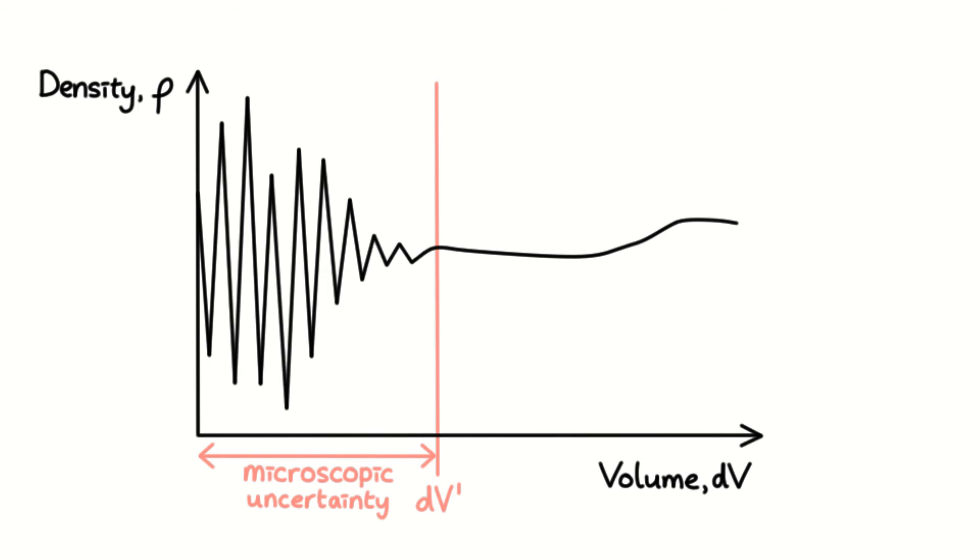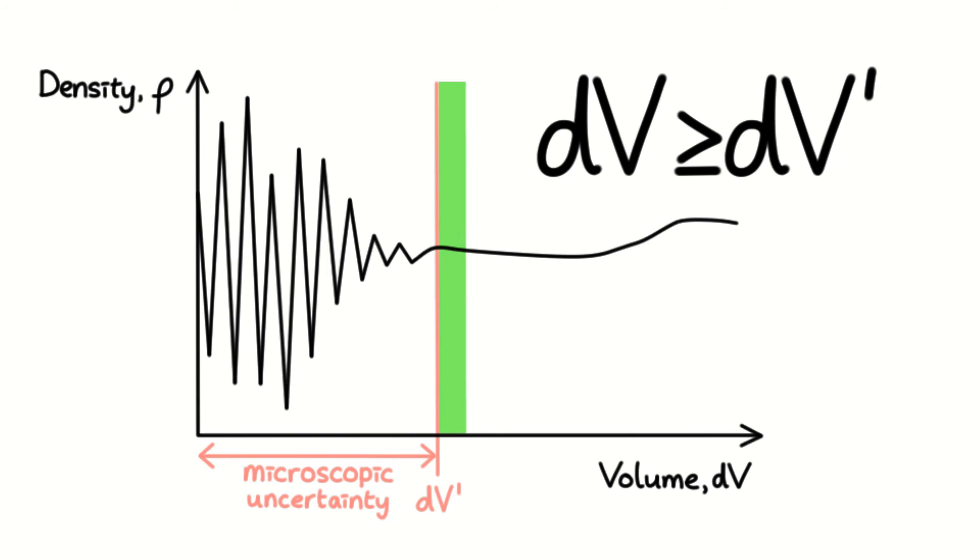Therefore, your chosen volume, dV, should be kept above the value of dV prime. dV prime is a lower limit value that is about 10 to the minus 9 millimetres cubed for all liquids and gases at atmospheric pressure.